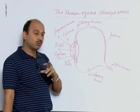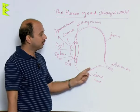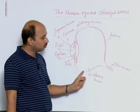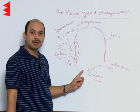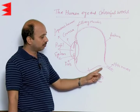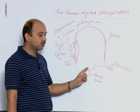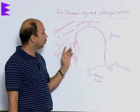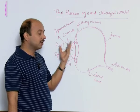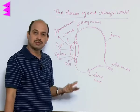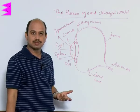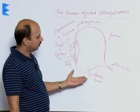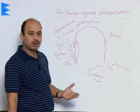Now you should practice the working of the human eye with a diagram. Try to make the diagram yourself and practice it — this is a very important question, as the human eye is a very important optical instrument. The working of the human eye is very important.